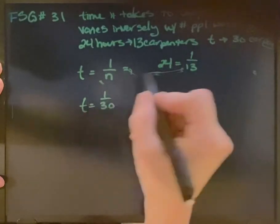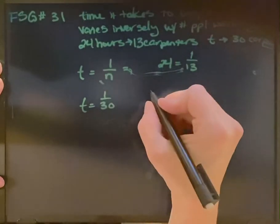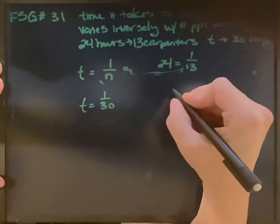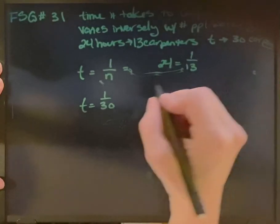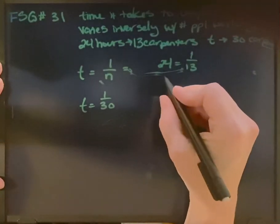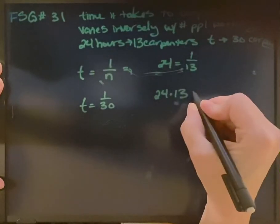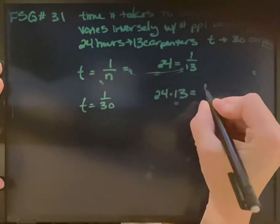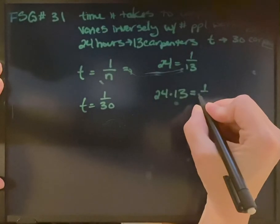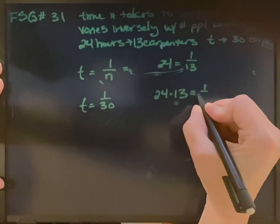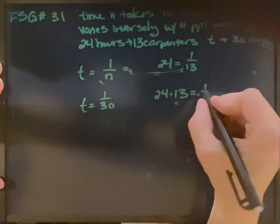So we'll set these equal to each other. That means we've got 24 times 13 equals 1 over 30. Oh sorry, equals 30t.